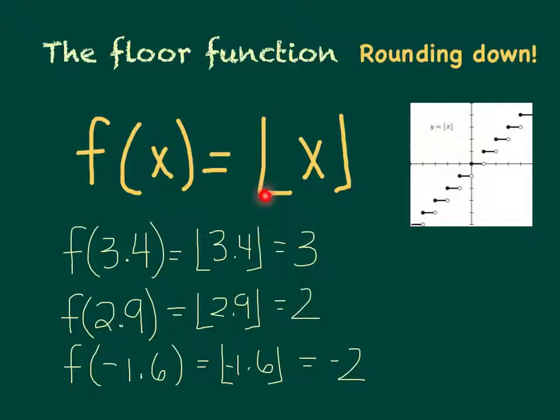It's written as two vertical lines with little feet at the bottom and your number in the middle. So for example, if f is our floor function of 3.4, you would write it as 3.4 in those vertical lines with the feet, and that would equal 3. We're basically just rounding down, always. Even if you take a number like 2.9, which is much closer to 3, we're still going to just round down to 2.